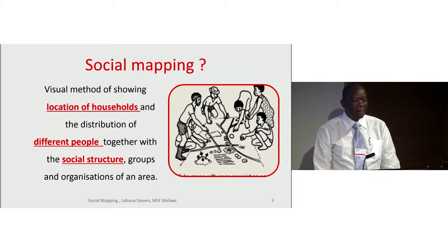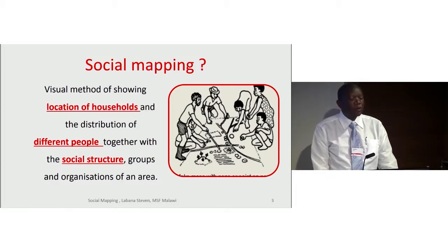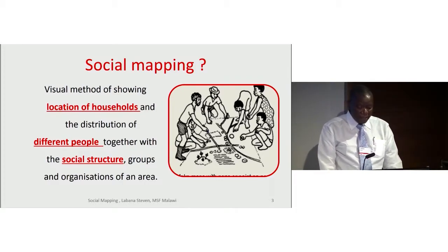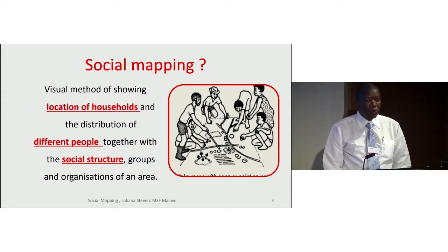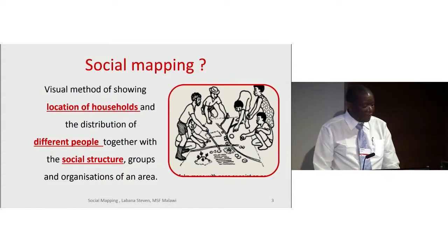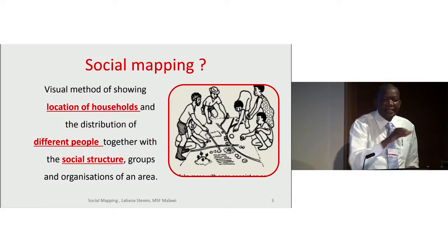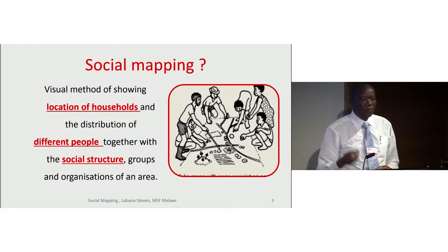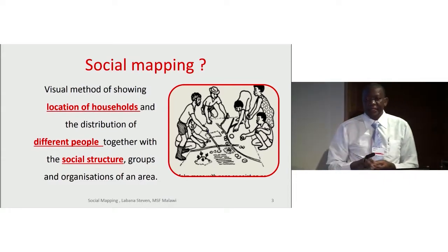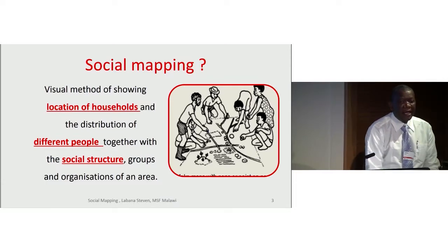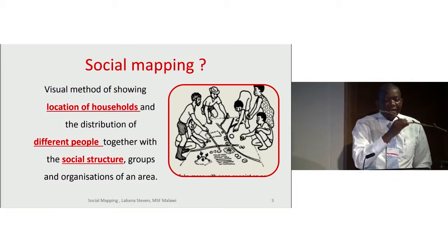What is social mapping? Social mapping is a participatory methodology that helps to visualize the location of households, the distribution of different people, together with the social structures existing in the area, including groups and organizations. You use simple available tools, like stones, to allocate areas — for example, you can ask people to locate where their health facility is, where the school is. You also use a simple stick so that they draw the rivers and the boundary of the area.